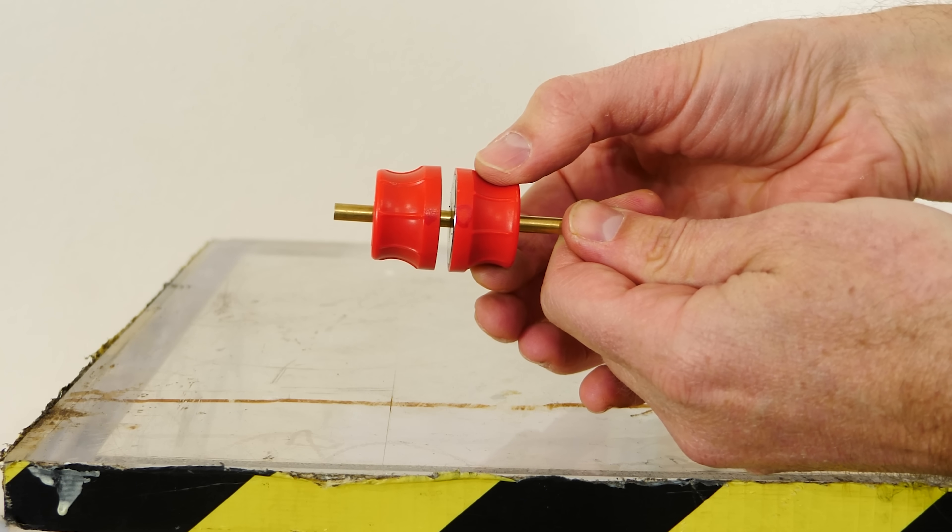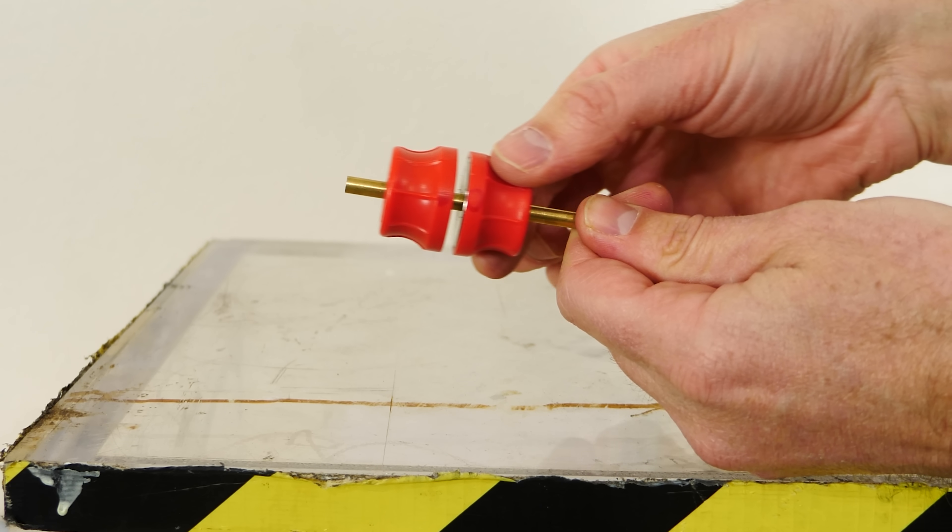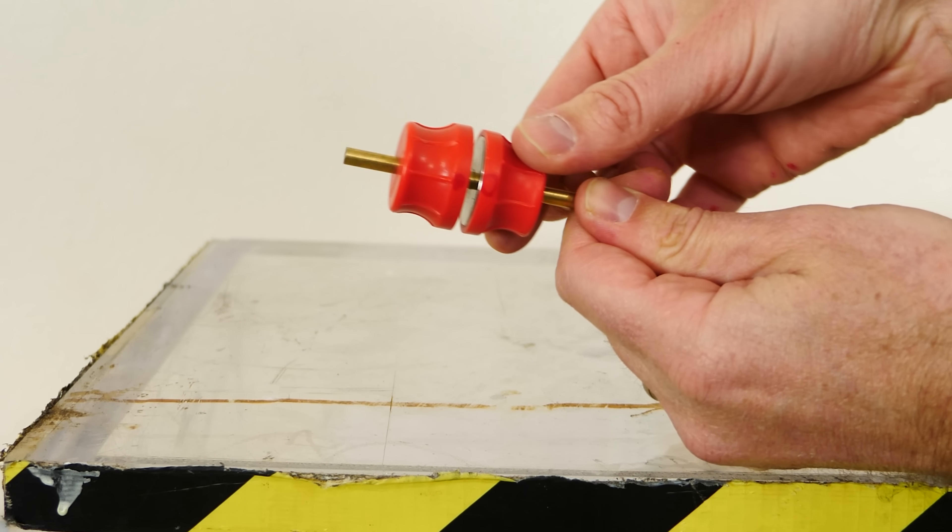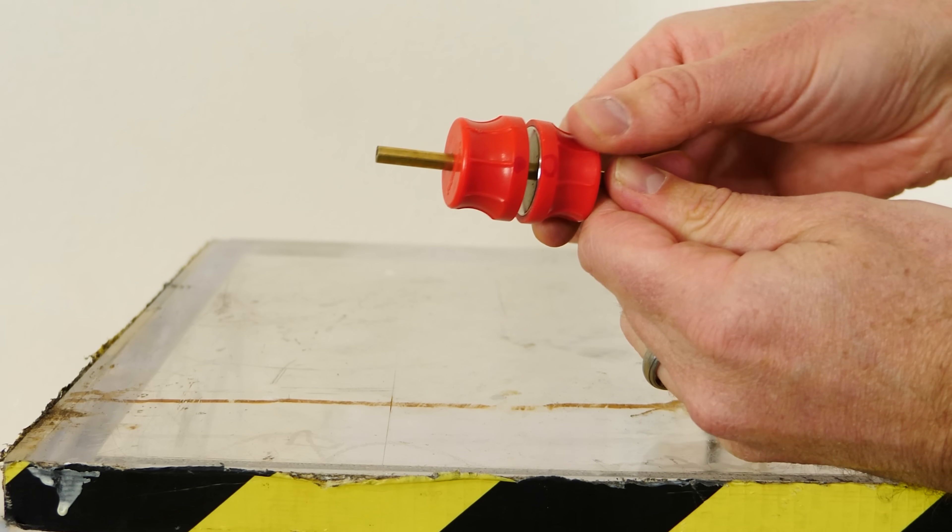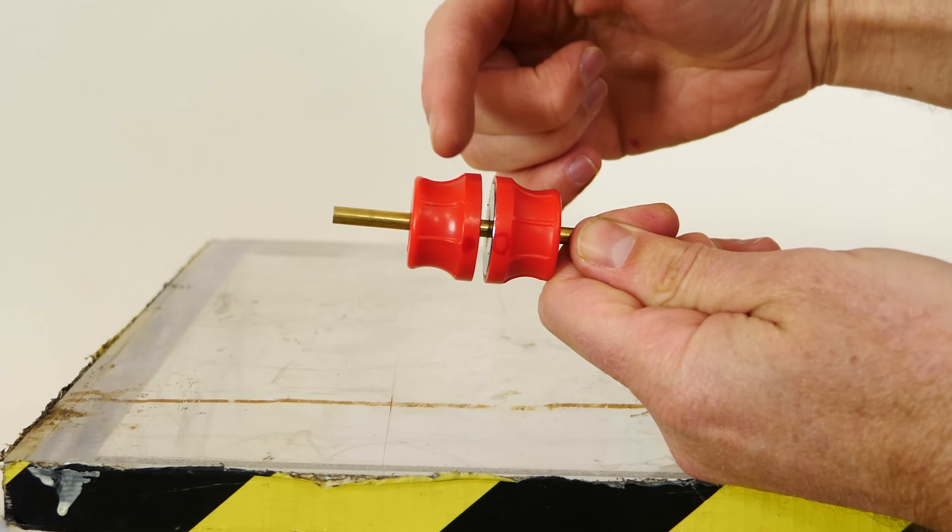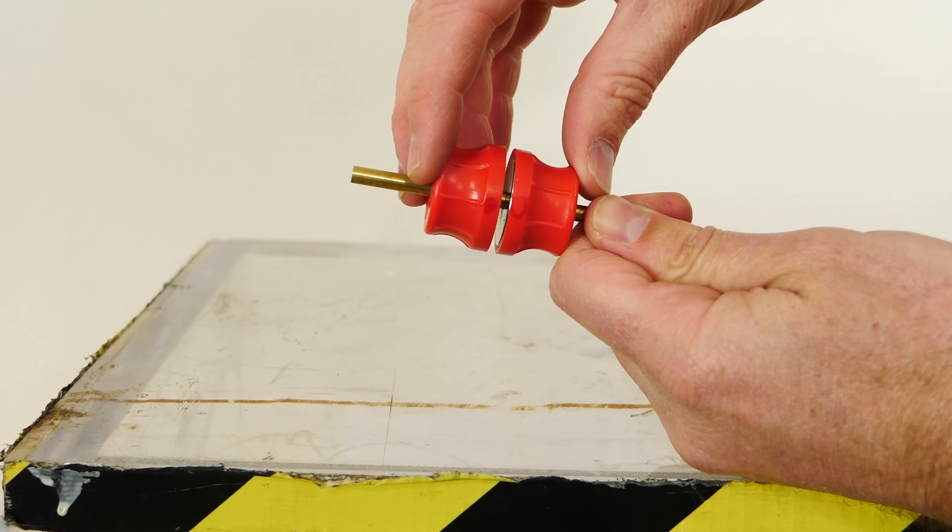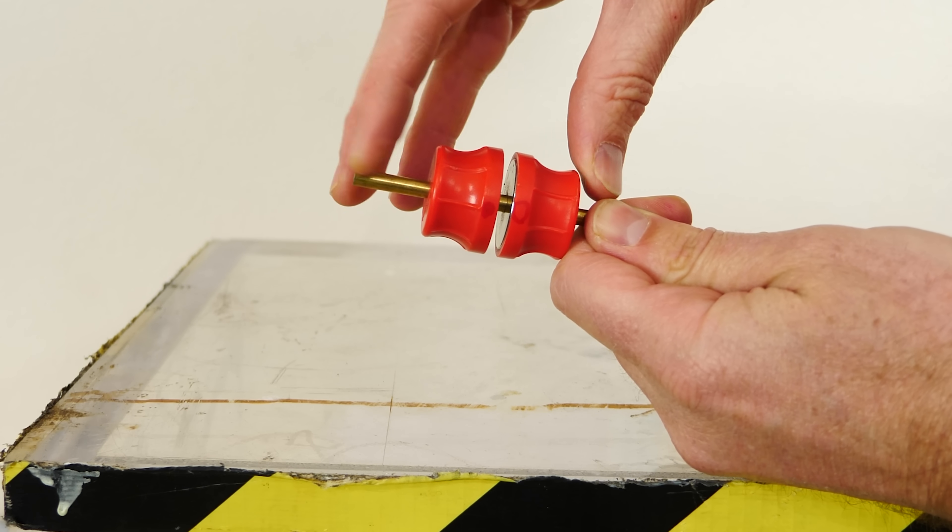So watch when I pull this one, this one follows it. So it stays at a fixed distance now. So it's being both repelled and attracted at the same time. It attracts up to a certain point and after that it repels.